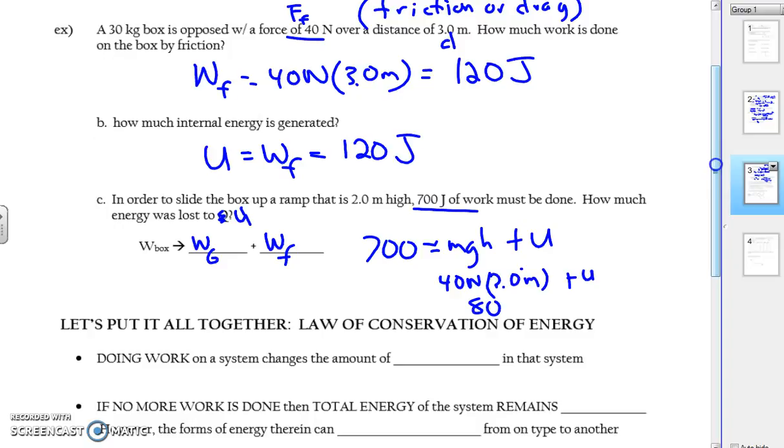So 40 times 2 is 80. Wait, I messed that up. Okay, so mgh is going to be 30 times we use 10 again times 2 plus U. So this is 300 times 2, which is 600. No wait, 30 times 10 is 300. So what's left over is we have 400 joules of energy was lost to thermal. We only got 300 joules of potential for our input of 700.